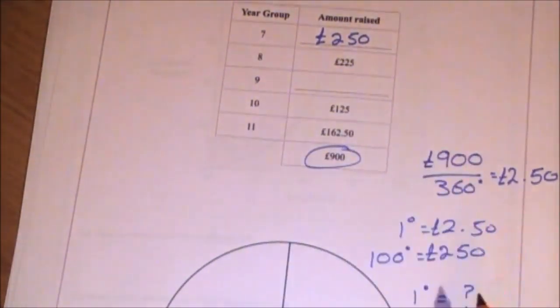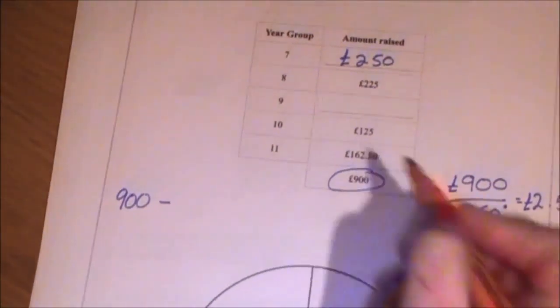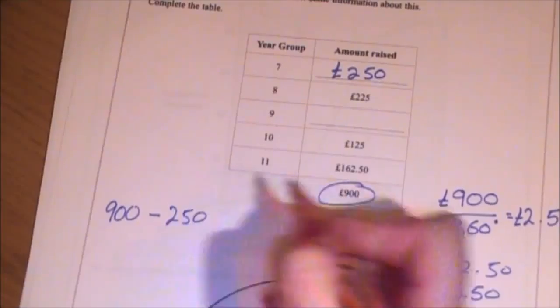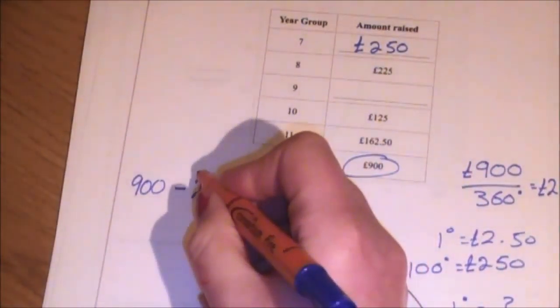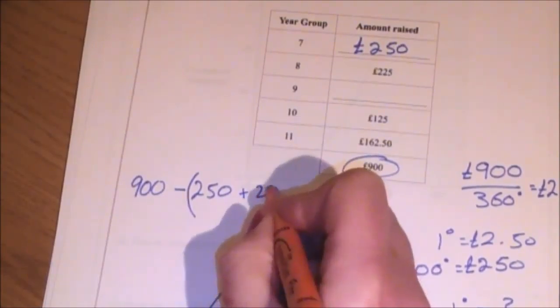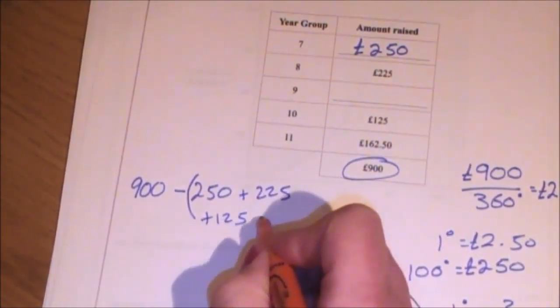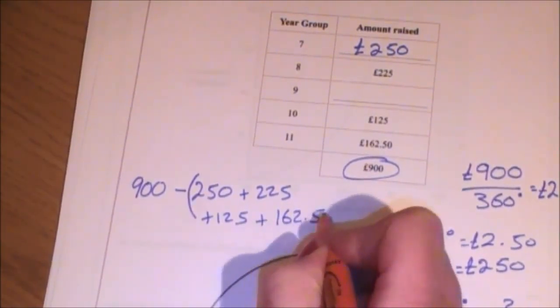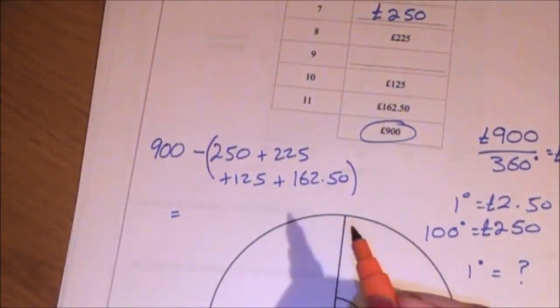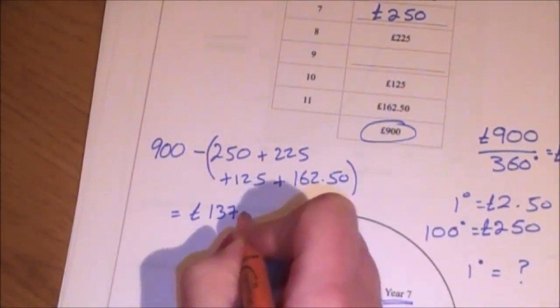I can take my total, which is 900, and I can subtract all of those added together. So I can take away the £250 from year 7. I'm going to put a bracket here. I'm going to take away the £250 and the £225 and the £125 and the £162. Once I've done 900 take away all of that, that leaves me with £137.50.